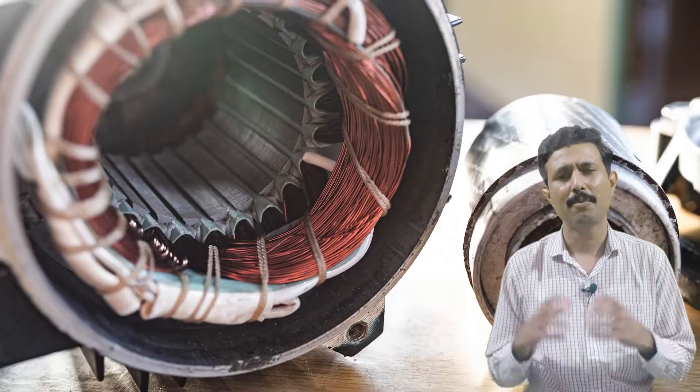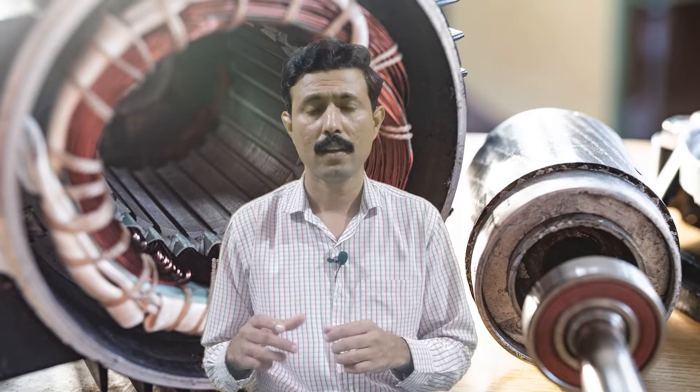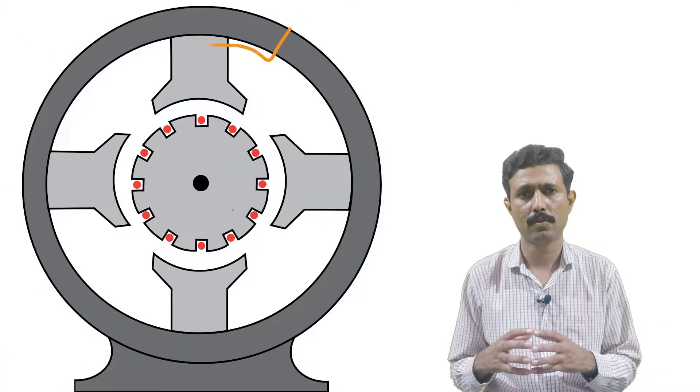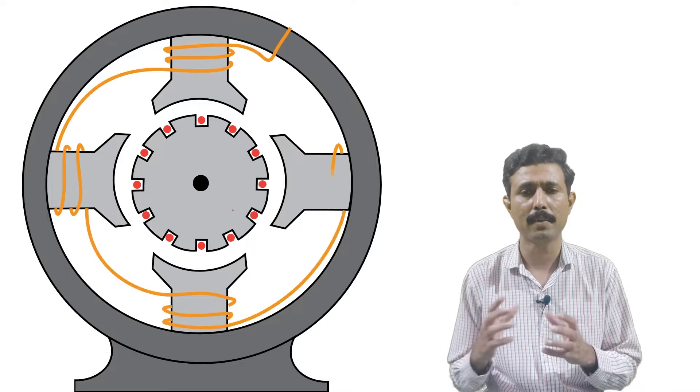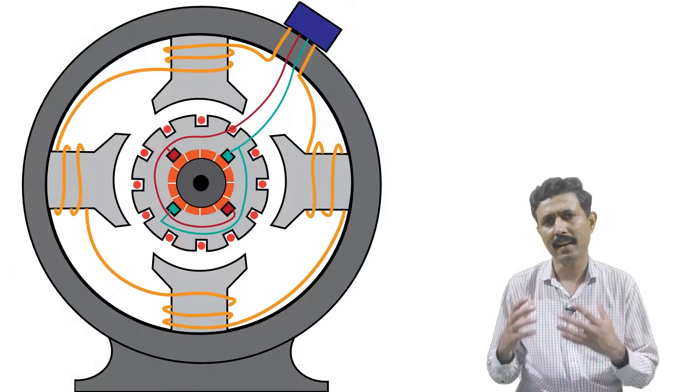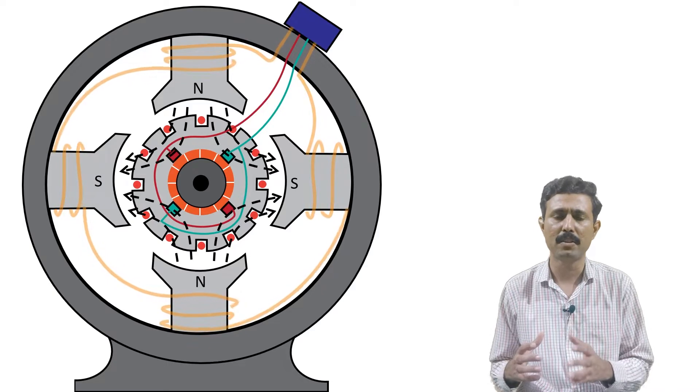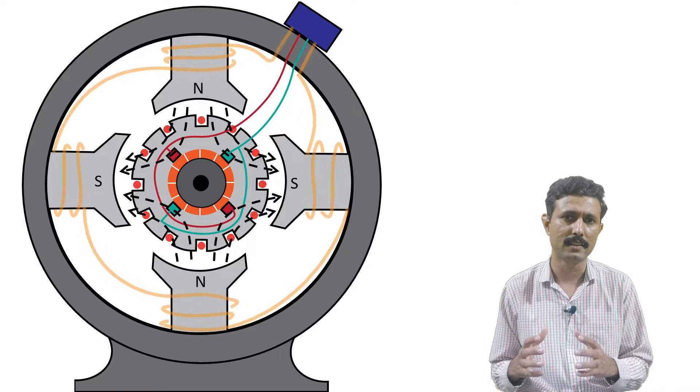First of all, you should tell me what is the purpose of the core. If you know the answer, then write that thing in comments below. The first purpose of the core is to provide mechanical support to the winding placed on that core, and the other purpose is to help establish the strong magnetic field. So these are the two purposes of the core in electrical machines.